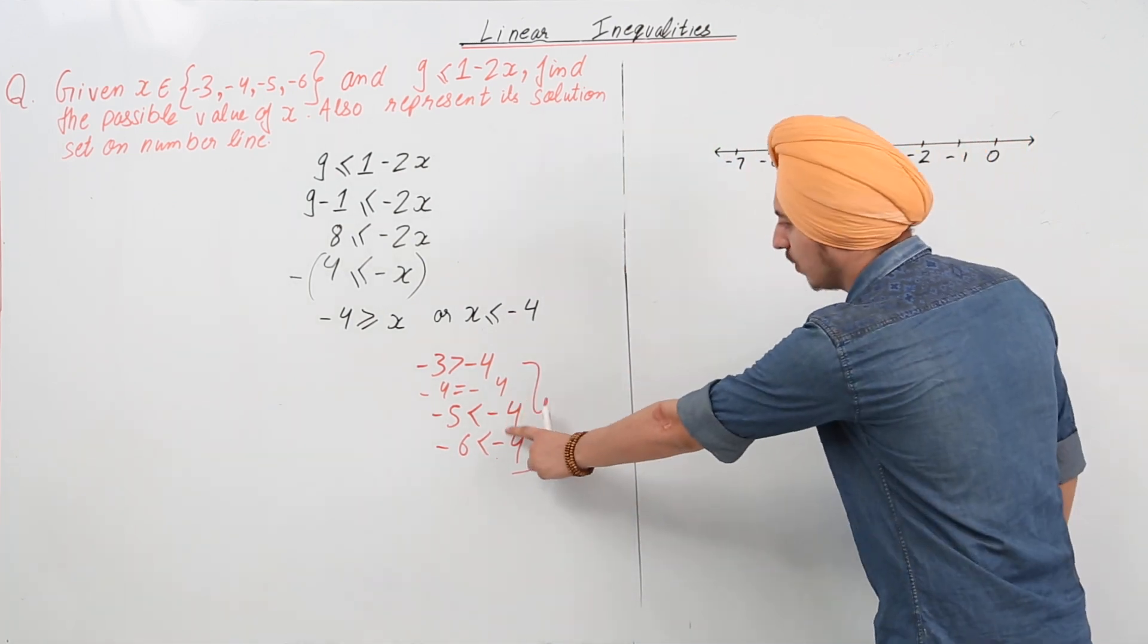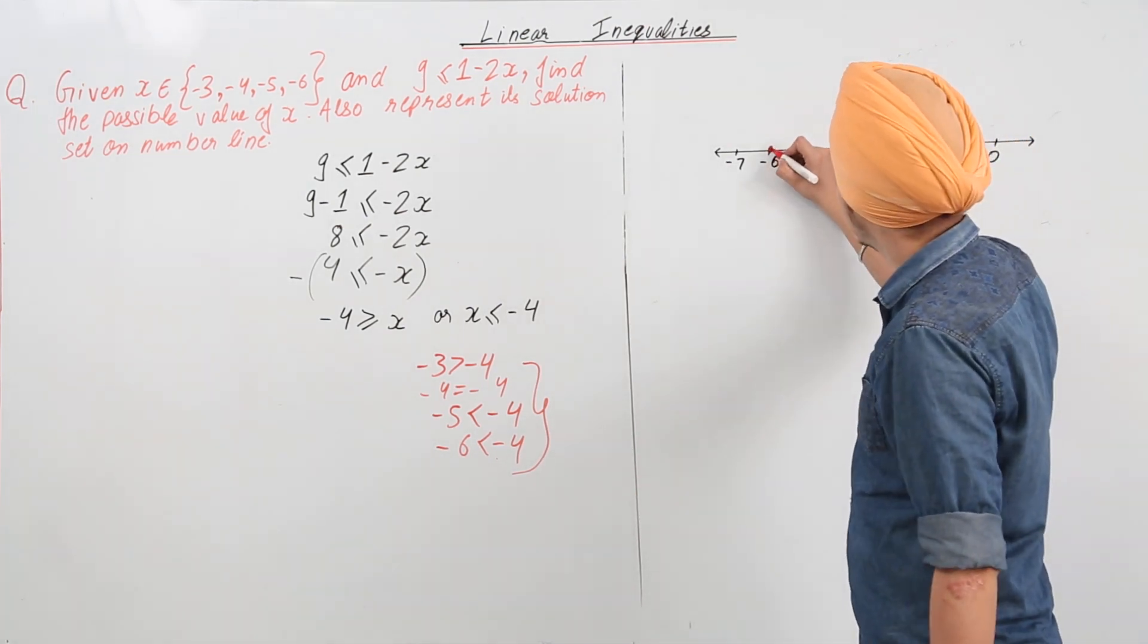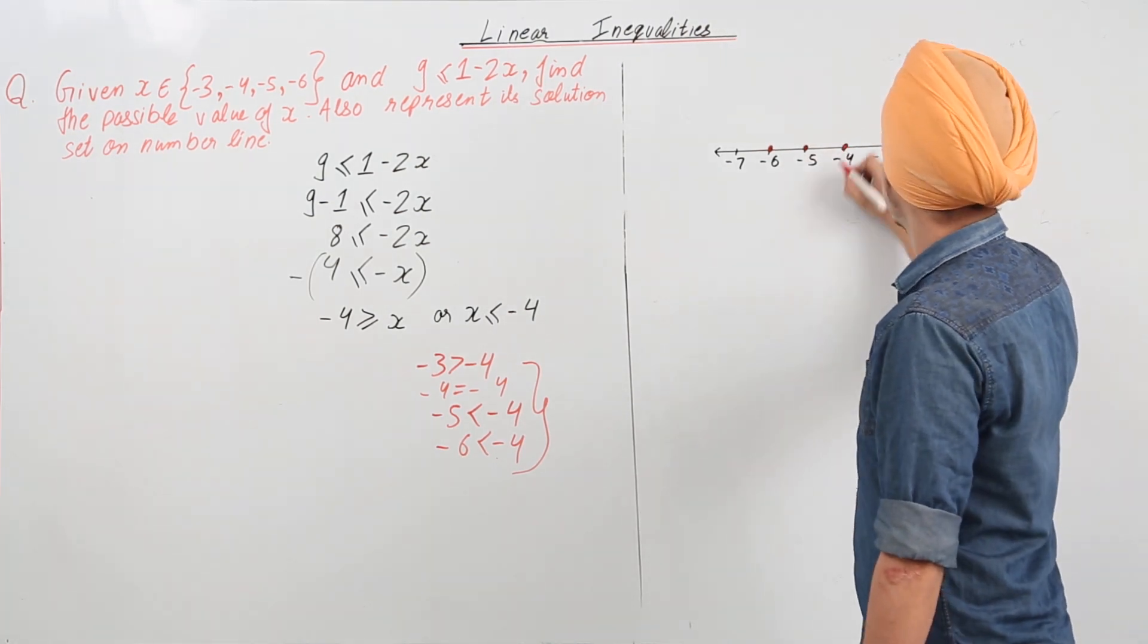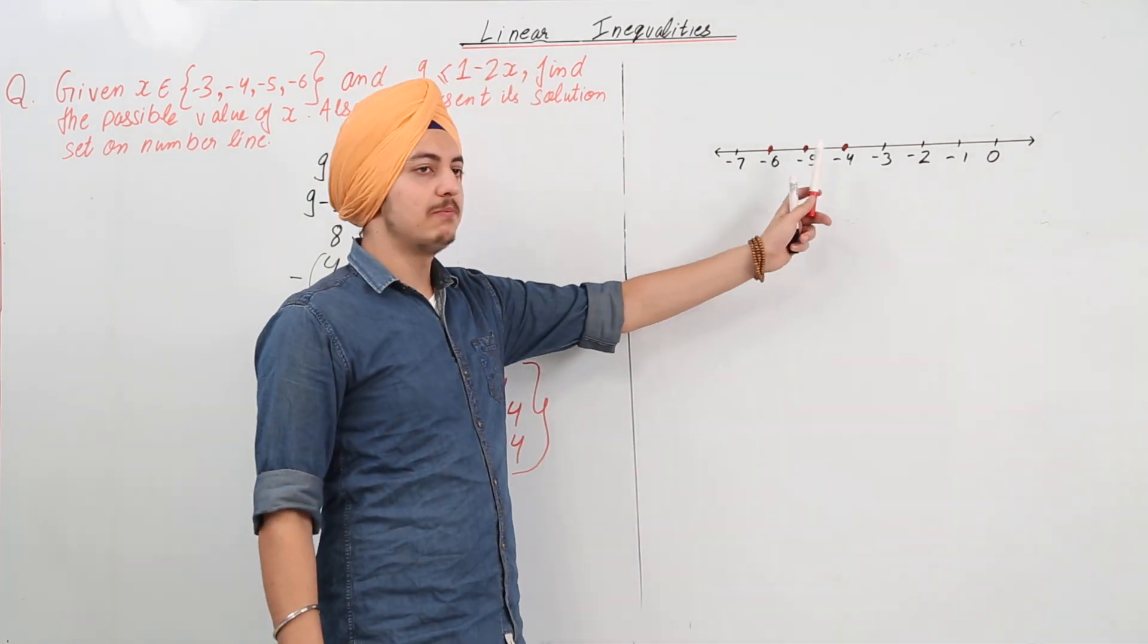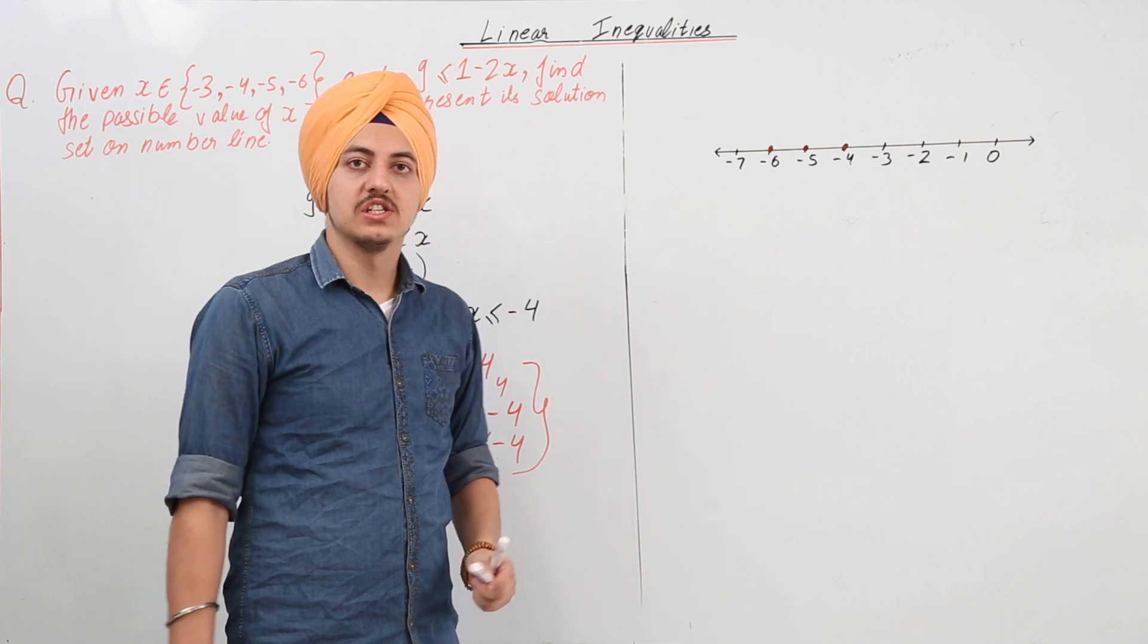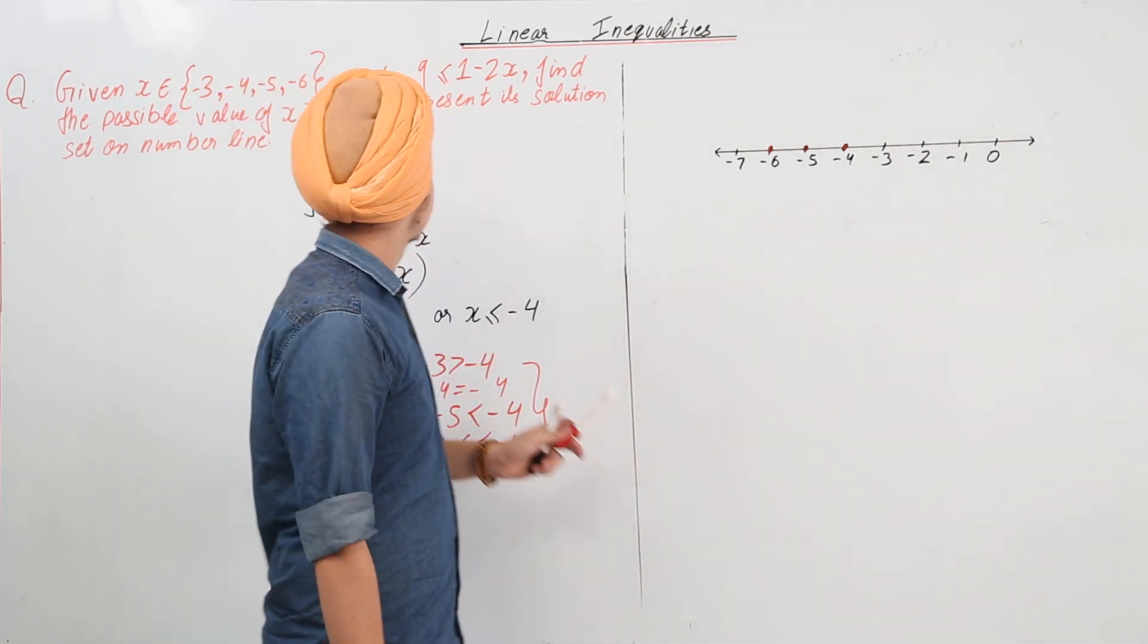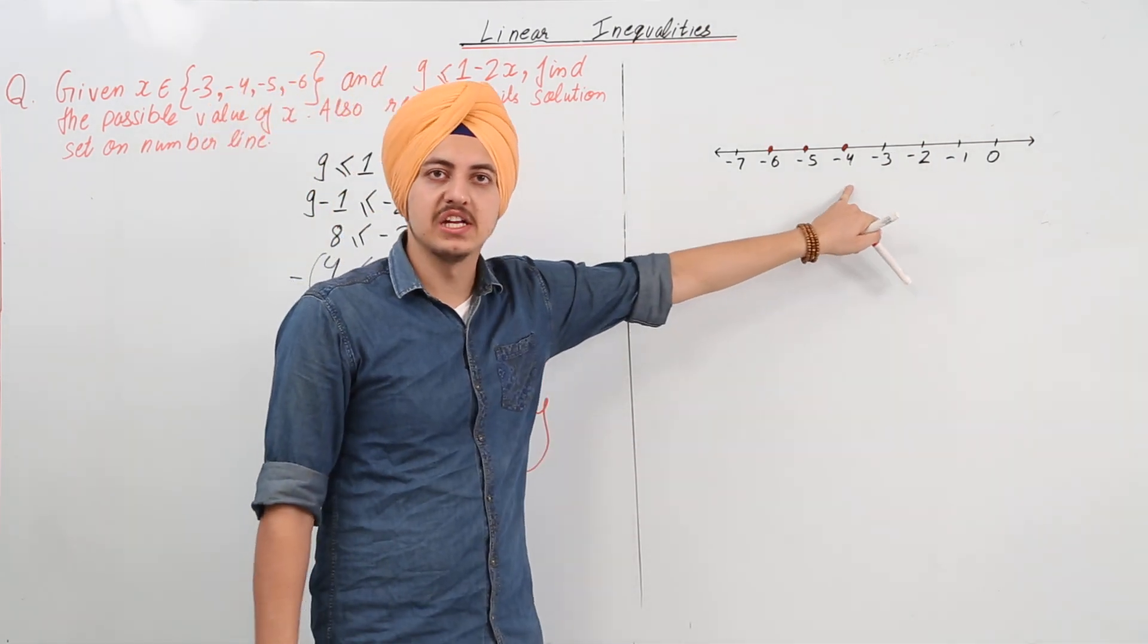So we have to represent all these three numbers on the number line, which is this point, this point, and this point. So the points I have marked with the line are the solution to this inequality, the values of x which satisfy this inequality. So they are minus 6, minus 5, and minus 4.